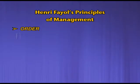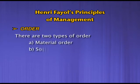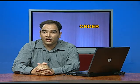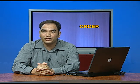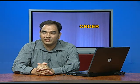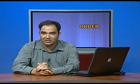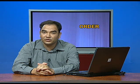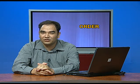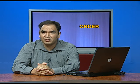The next principle is order. There are two types of order: material order and social order. Materials and people must be in suitable places at appropriate times for maximum efficiency. Here, order doesn't mean commands given by one person to another; it means each and everything should be placed where it should be — human resources and physical resources alike. For example, a technician needing a tool must know exactly where to find it, without searching everywhere. Management must fix a place for everything and make it known to all employees.